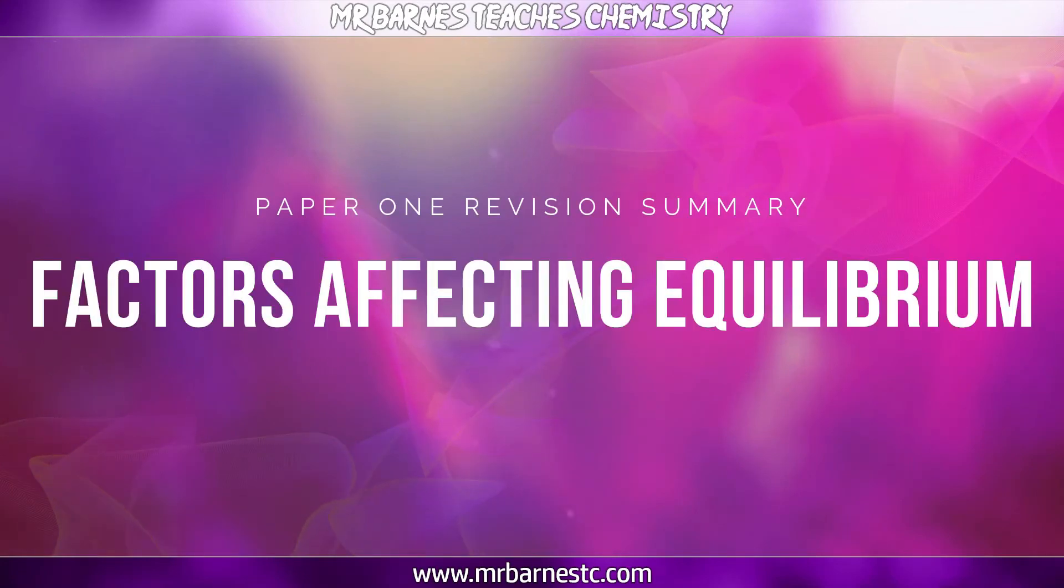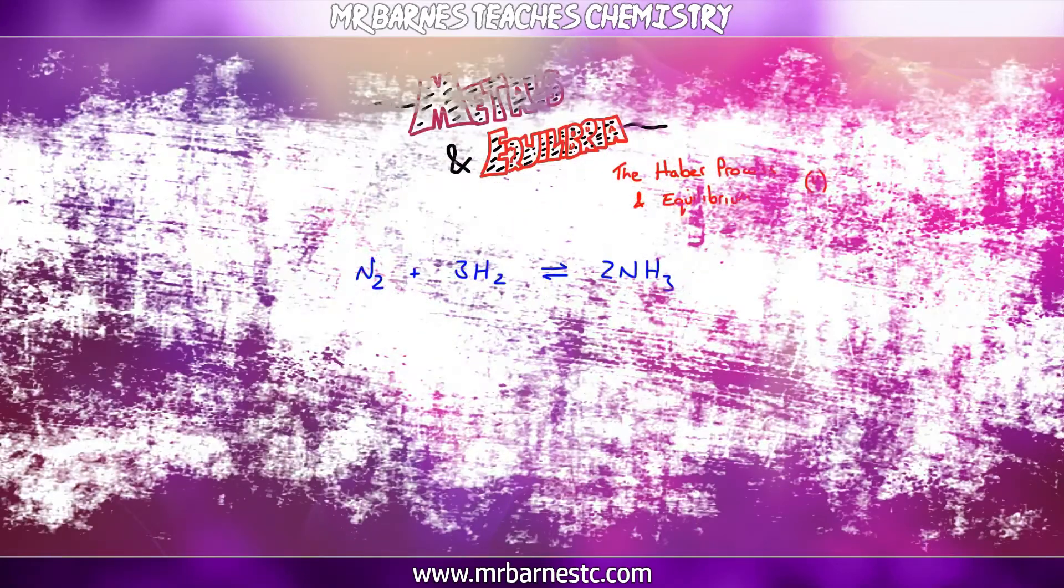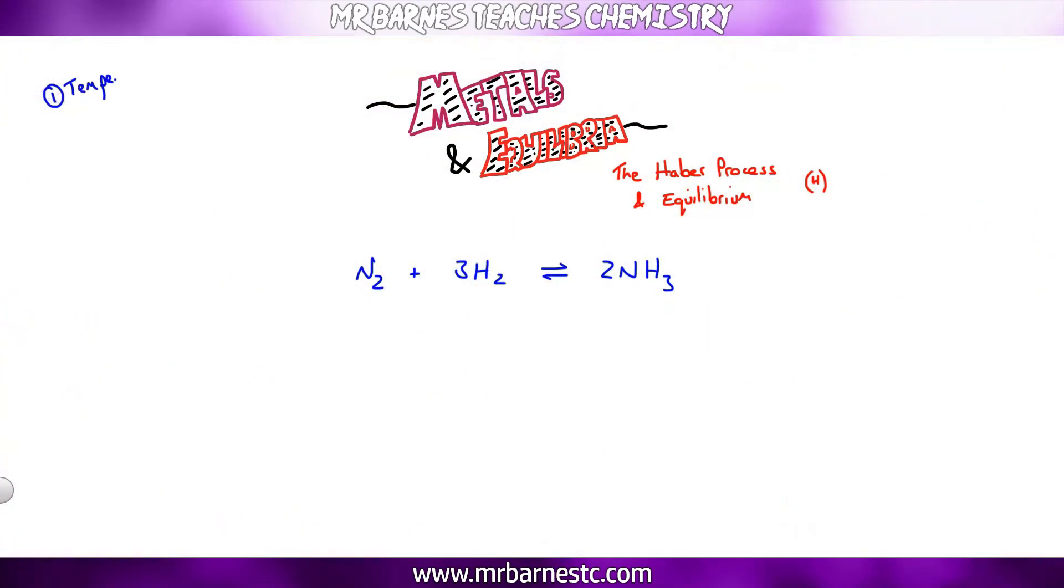Onto the factors that affect equilibrium. We're going to start off with the main one which is temperature. Now if you change the temperature in a reversible reaction there are two different types of reaction. There's an endothermic and an exothermic part. For the Haber process the forward reaction is exothermic and the backwards reaction is endothermic.